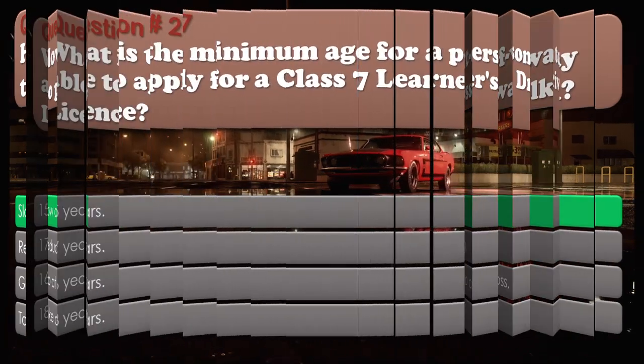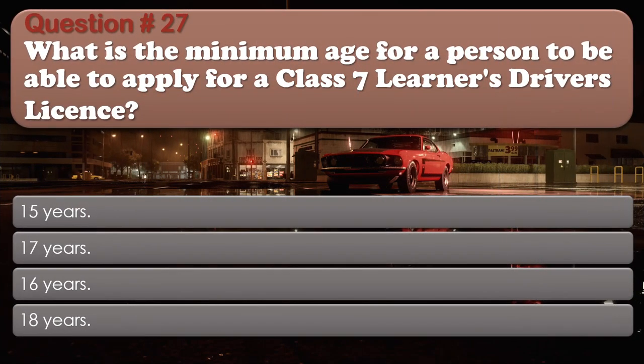Question number 27. What is the minimum age for a person to be able to apply for a class 7 learner's driver's license? 15 years. 17 years. 16 years. 18 years. The correct answer is: 15 years.